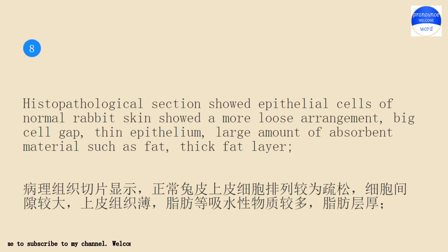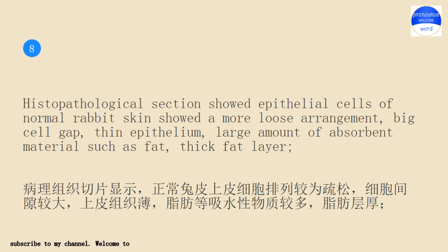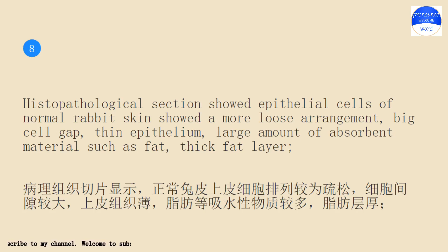Histopathological section showed epithelial cells of normal rabbit skin showed a more loose arrangement, big cell gap, thin epithelium, large amount of absorbent material such as fat, and a thick fat layer.